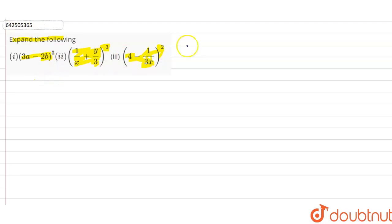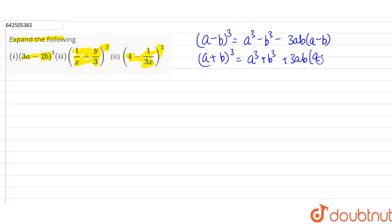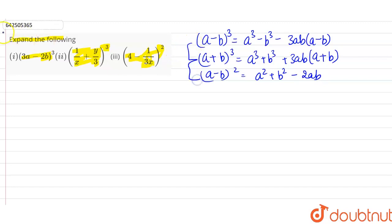In this question we are going to use three identities. First: (a - b)³ = a³ - b³ - 3ab(a - b). Second: (a + b)³ = a³ + b³ + 3ab(a + b). Third: (a - b)² = a² + b² - 2ab.